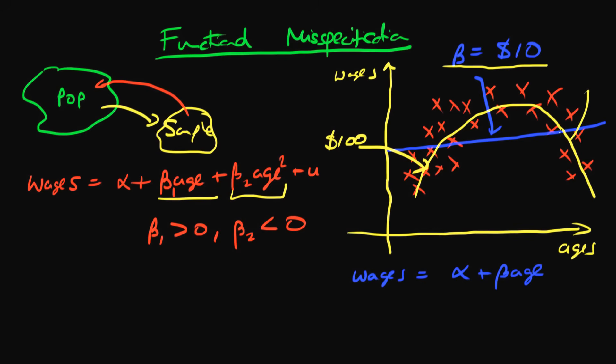But conversely, our estimate for people when they get to retirement age is also grossly wrong. Perhaps an extra year of age when you're 60 or 55 means that you actually command 100 dollars less per week in wages. So not only has our linear estimate of the effect of age on wage been grossly wrong for people who are young, it also is very wrong for people who are very old as well. It's not only wrong in terms of magnitude, it's also wrong in terms of sign.